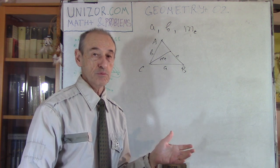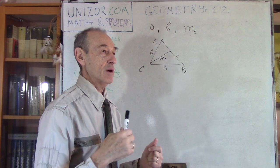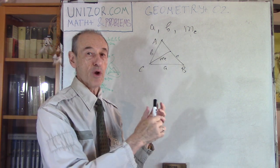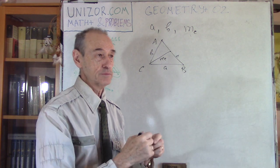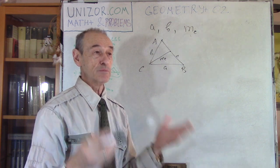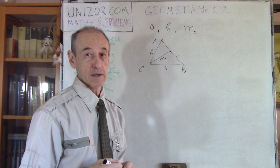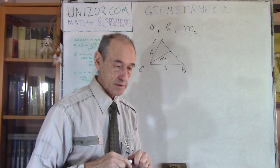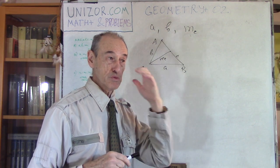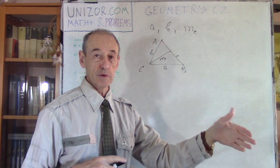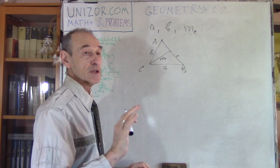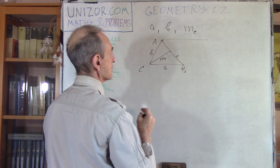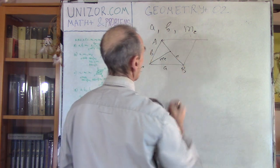I suggest you pause the video and think about this yourself. As a hint: what's important in construction problems is to reduce the given problem to another one which has already been considered. For example, we know we can build a triangle knowing its three sides. We don't know the three sides of this triangle yet, but we know something which can lead us there. Here is an additional construction which will reduce this problem to already known ones.